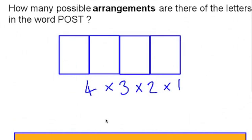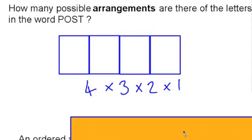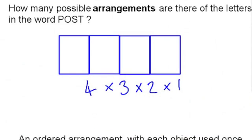These arrangements of letters where the order makes a difference are called permutations of the letters. So as you can see here, a permutation is an ordered arrangement with each object used once. In the case of the letters in the word post, there are 24 permutations of these letters.